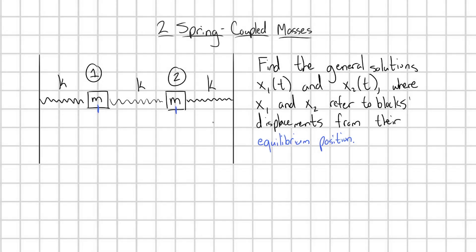Hello there. Consider the following problem. Here I've got some masses of mass m, and they're all connected by springs of spring constant k in the arrangement shown. This is constrained just to move in the x direction — the masses aren't going to move up and down, they're just going to be oscillating to the left or to the right. My goal is to find the general solutions x1 and x2 of t, where these refer to the blocks' displacements from their equilibrium position, indicated here in blue. Equilibrium position is just the positions of the blocks where the springs are totally unstretched.